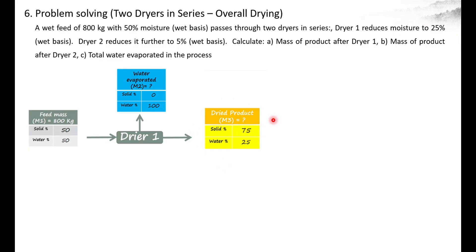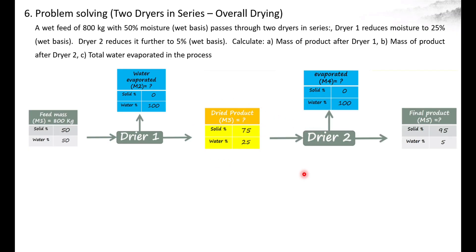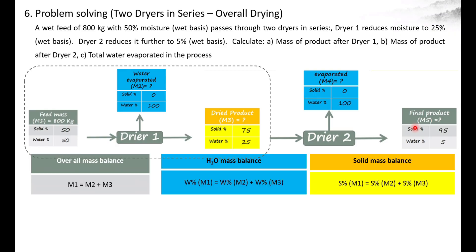This dried product from Dryer 1 is sent as feed to Dryer 2. The water evaporated in Dryer 2 is not known, so we leave it for now. Coming to the final product: the second dryer reduces moisture further to 5% wet basis, so the water percentage is 5% and the remaining 95% is solid. To solve this problem we proceed dryer by dryer, starting with Dryer 1. The overall mass balance is M1 equals M2 plus M3.